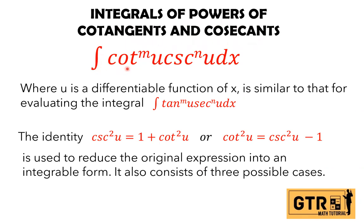We have the integral of cotangent to the m, cosecant to the n dx, where u is a differentiable function of x. This is similar to evaluating the integral of tangent to the m, secant to the n dx. We will use the identity: cosecant squared u equals 1 plus cotangent squared u, or equivalently cotangent squared u equals cosecant squared u minus 1, to reduce the original expression into an integrable form. This consists of three possible cases.